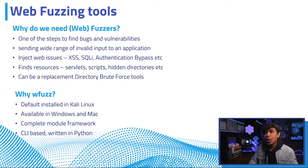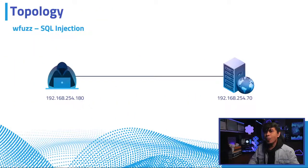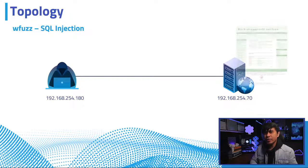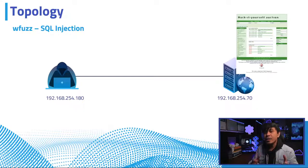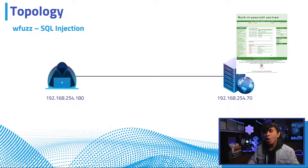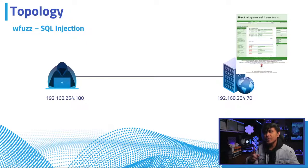Here is our web ethical hacking topology. We have two nodes: the attacker and the target web server. Our goal is to run an SQL injection via web fuzzing. SQL injection is an injection technique where we use database queries via HTML forms. A successful SQL injection allows the attacker to view data that they would not normally be able to retrieve, or worse, the attacker would be able to delete important data using direct database queries.